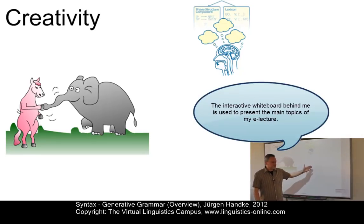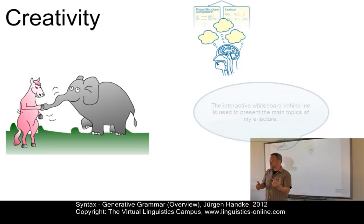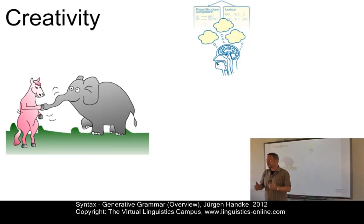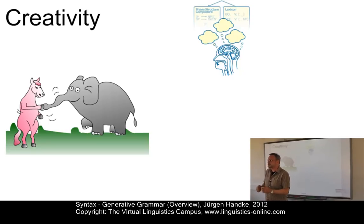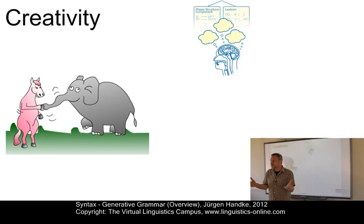Here's another example: 'The interactive whiteboard behind me is used to present the main topics of my e-lecture.' Have you heard this sentence before? Probably not, but you can understand it. This creative character shows that language cannot simply be learnt by imitation. Rather, languages are acquired by principles of abstraction — and perhaps, some linguists argue, these principles are even innate.